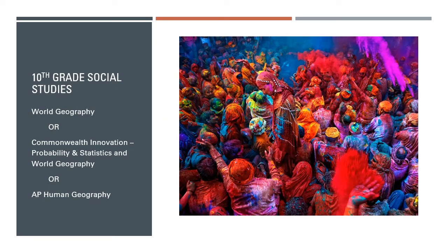Tenth grade students have three options as well. They can take World Geography and develop a basic understanding of the concepts of the discipline, getting a great understanding of the world around them from a cultural, political, economic, human population, and climatic perspective. Students can also take Commonwealth Innovation Probability and Statistics in World Geography, exploring the same concepts through the lens of probability and statistics using a project-based approach. Their last option is to take AP Human Geography — check out our AP video for more information. Just like in World History, students have the option of taking an SOL at the end of World Geography if needed to fulfill graduation requirements.